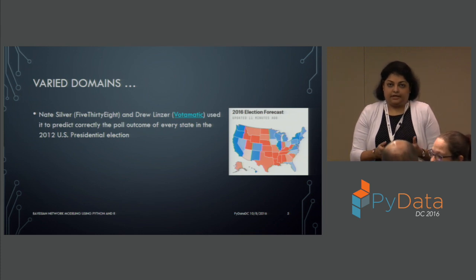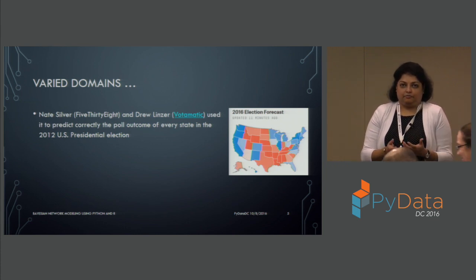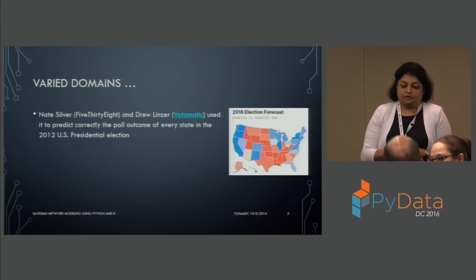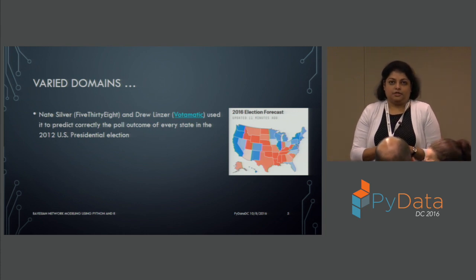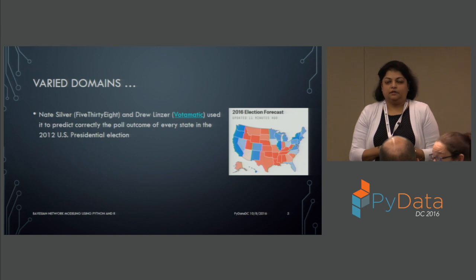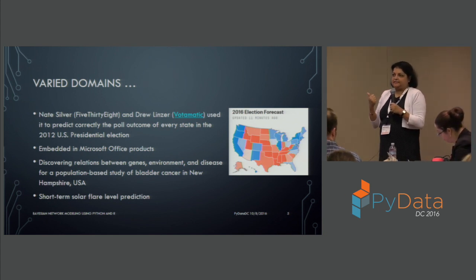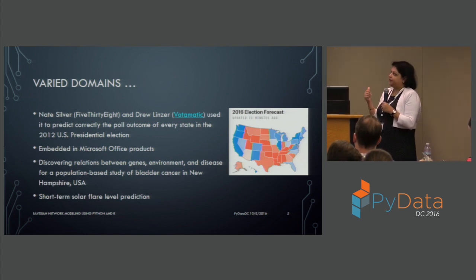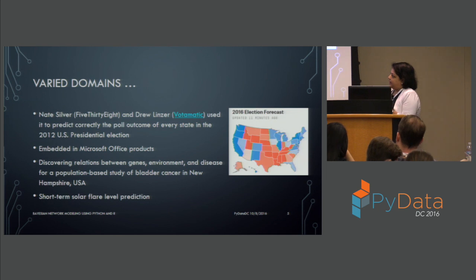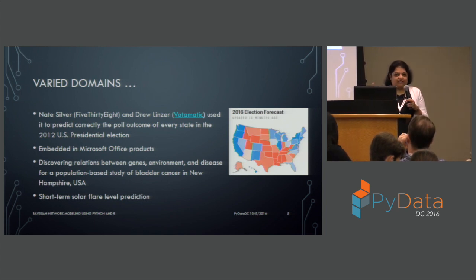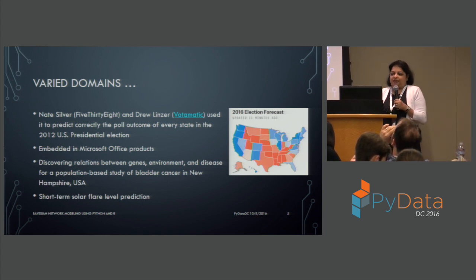Bayesian networks have also been used in election prediction and polls. Nate Silver from 538 Blog and Drew Lenzo from Automatic use Bayesian methods for prediction — along with multiple other techniques, but Bayesian network is one of the prime ones and it's been known to work. Some other applications include Microsoft Office products: Office Assist, which you use for asking questions and learning about the product, uses Bayesian modeling. Other applications include discovering the relations between genes, the environment, and disease propagation for a given population.